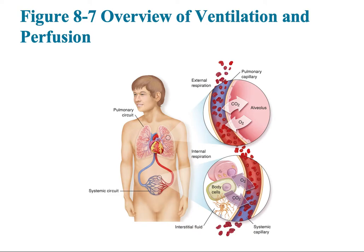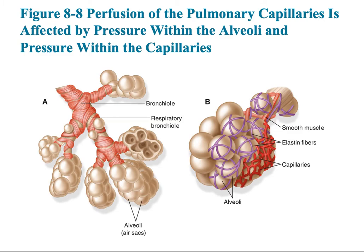Ventilation cannot carry oxygen down to the cells and tissues without an intact circulatory system. We need the heart to be functioning, as well as the conduits — arteries, arterioles, capillaries, venules, and veins — to be intact and allowing blood to circulate. There is smooth muscle around the bronchioles that dilates during fight or flight and can constrict during medical emergencies. Oxygen is broken down as it crosses the alveoli at the capillary bed, where gas exchange occurs.